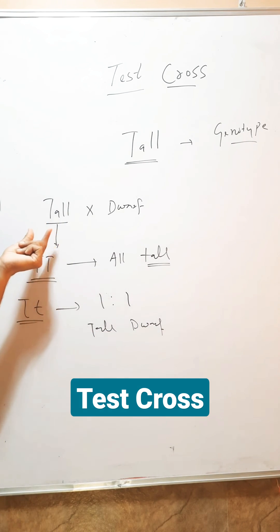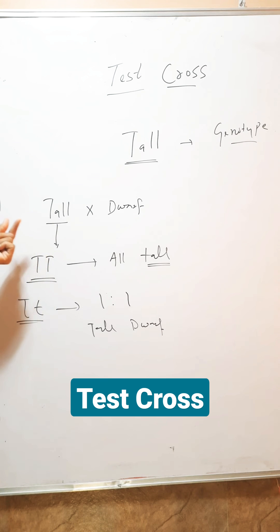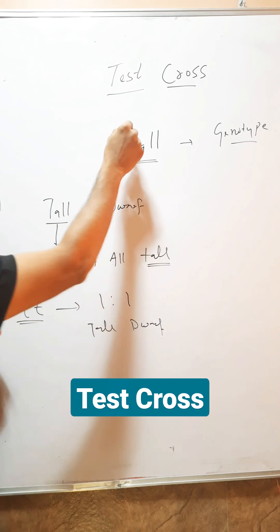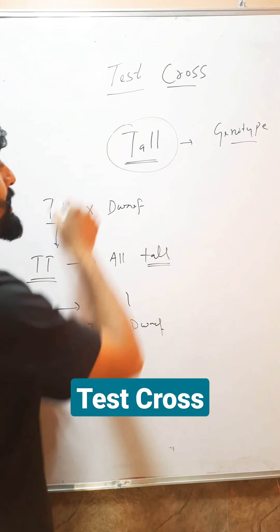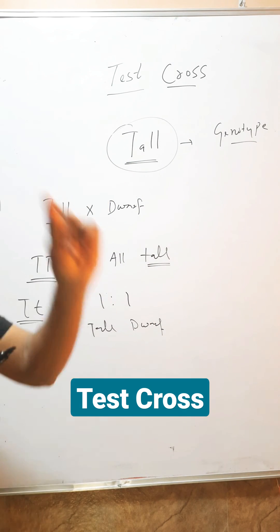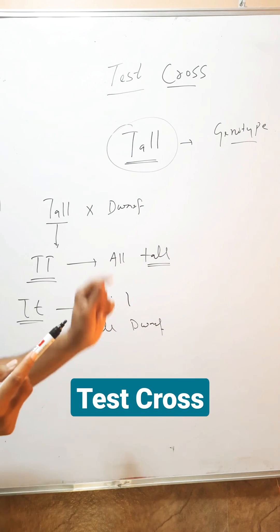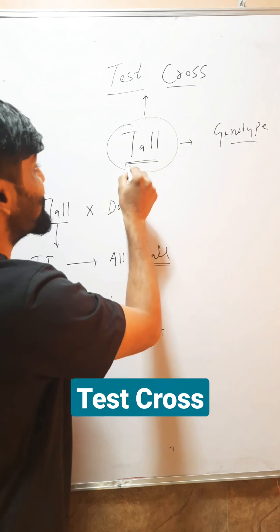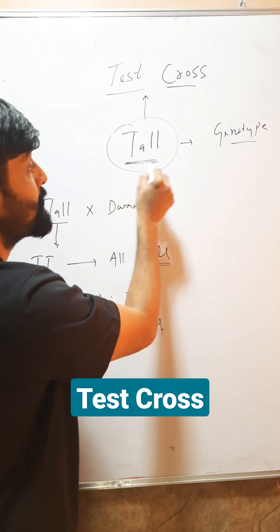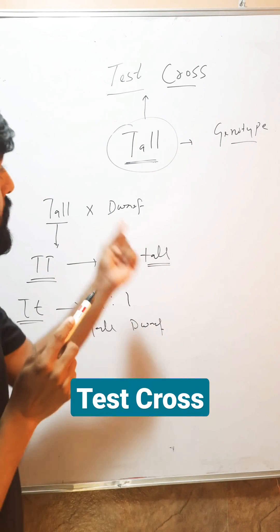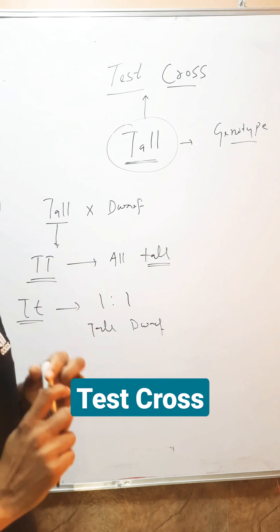So, this cross which tells us about an unknown dominant — whether it is homozygous or heterozygous — is called a test cross, because it tests whether it is homozygous dominant or heterozygous dominant.